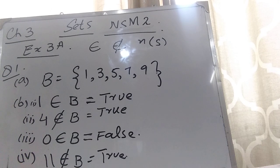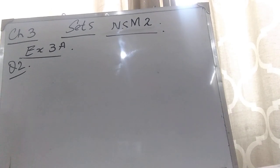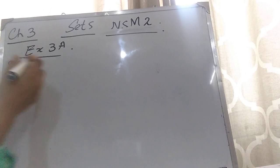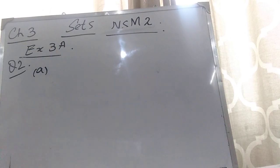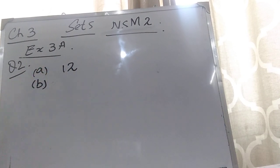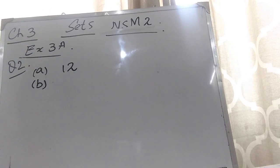Now I am going to explain question number 2: state the number of elements in each of the following sets. Part A: months in the year. You know that there are 12 months, so the number of elements is 12. The number of elements means you have to count the members of the set — when you count the months of the year, you get 12.